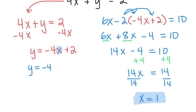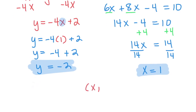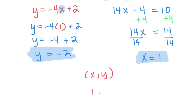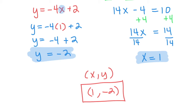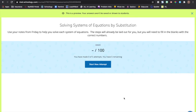So this turns into y equals negative 4 times 1 plus 2. Distributing gives negative 4 plus 2, which equals negative 2. Now that I have both values, the solution must be written as a coordinate point — x comma y — so our answer is the point (1, negative 2). That's how we solve that system of equations.